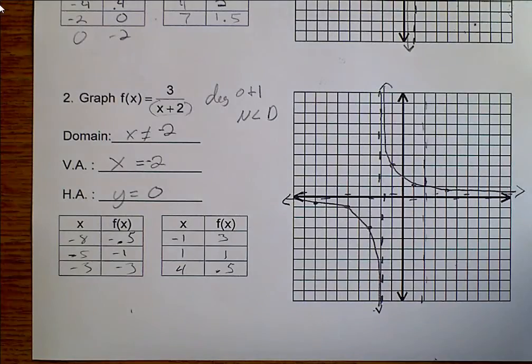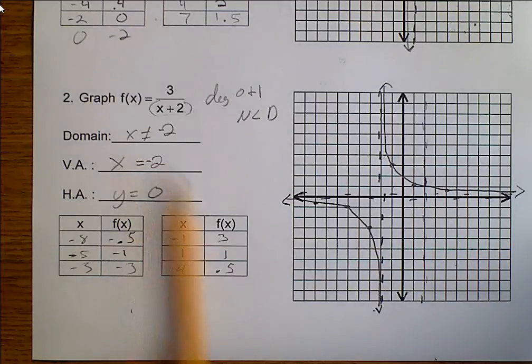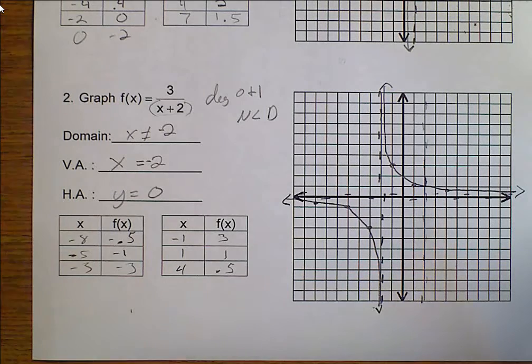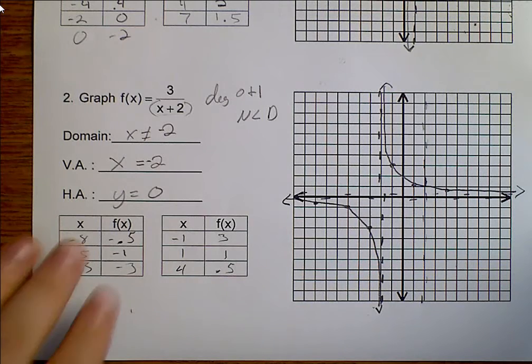And so that's the graph of our line. Fairly simple. Find your asymptotes. Plot some points around the asymptote. Plot your graphs. Let's go ahead and move on.